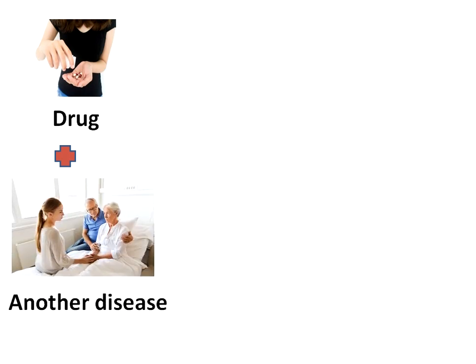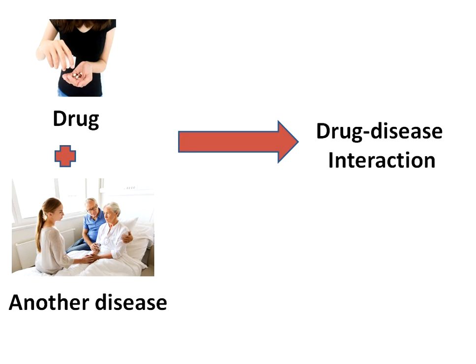Third, drug-disease interaction is an event in which a drug intended for therapeutic use causes harmful effects in a patient because of another disease or condition the patient has. For example, if you take a nasal decongestant like pseudoephedrine or phenylephrine, and you have high blood pressure, it will cause further elevation of your blood pressure.